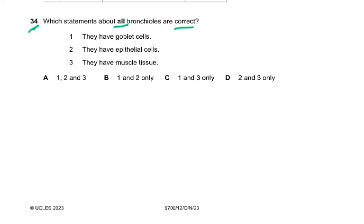Question 34: which statements about all bronchioles are correct? The answer is two and four only. Bronchioles have epithelial cells and muscle tissue. Goblet cells are not present in all bronchioles.